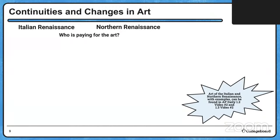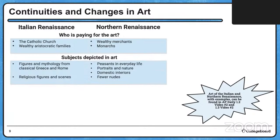First, who's paying for the art? In the Italian Renaissance, the Catholic Church and wealthy aristocratic families like the Medicis were the patrons. As we move North, we have wealthy merchants and monarchs as the big patrons. In terms of what's depicted: Italy features classical figures from mythology and ancient Greece and Rome, as well as religious figures and scenes. Moving North, we see a huge shift — peasants, normal people in their everyday lives, portraits, nature, domestic interiors, and fewer nudes than in the Italian Renaissance.